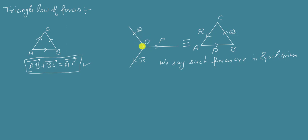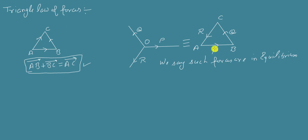If three forces acting at a point can be represented completely in magnitude as well as in direction by the three sides of the triangle, then the forces are in equilibrium. 'Can be represented completely' means the force and side AB have some proportionality relationship — either this side is half of the force or one third of the force — it has a proportionality relationship. So if we are able to do something like that, then we say that the forces are in equilibrium.